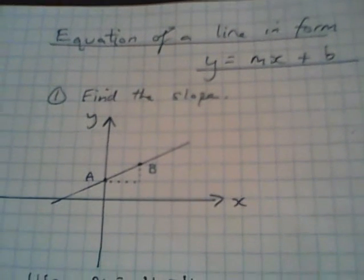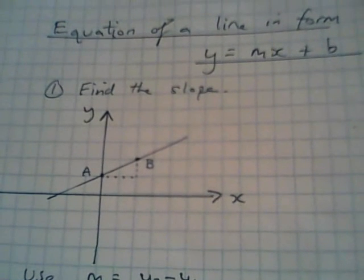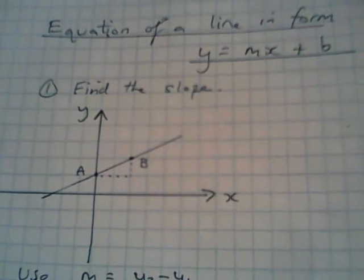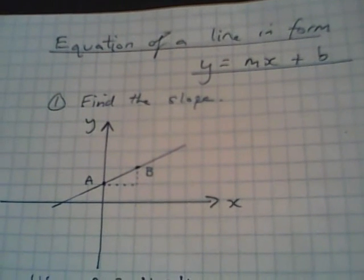This is a video for grade 9's, although grade 10's will find this useful for revision as well. We're looking at how to find the equation of a line in the form y equals mx plus b, where m is the slope and b is the y-intercept.